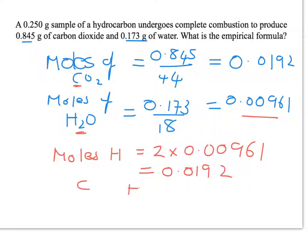So moles of hydrogen is going to equal 2 times 0.00961 which comes to 0.0192. So my ratio of carbon to hydrogen, carbon is 0.0192, hydrogen we've just worked out as being 0.0192. So if you divide by the smallest one, well it's the same. You will find you have a 1 to 1 ratio. So the empirical formula for this is CH.